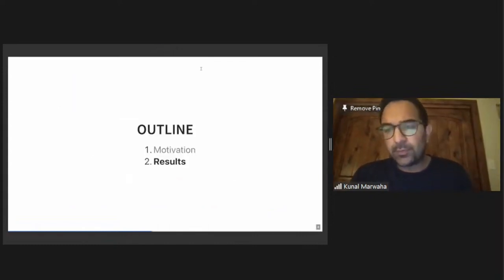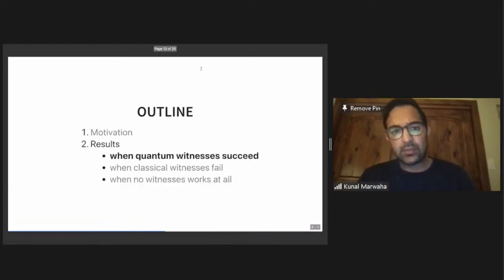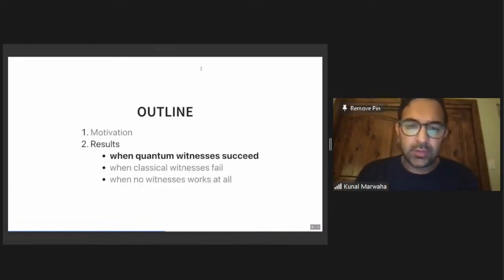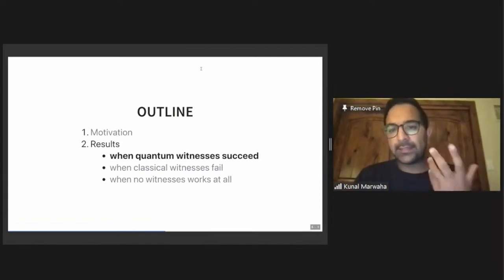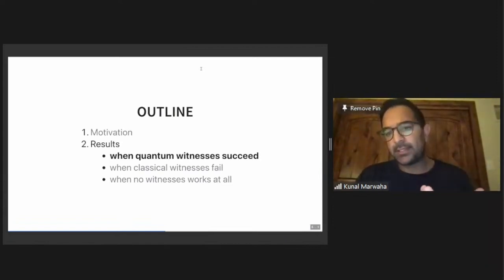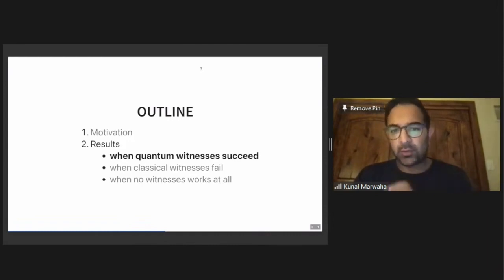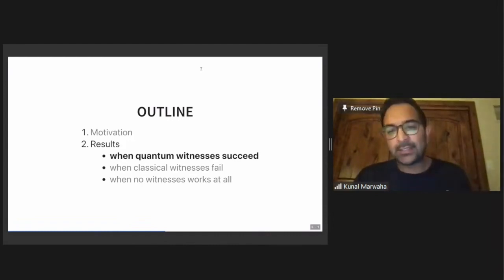I'll move on to the results section, split into three parts. We're looking at the same property testing problem, encoding it in different oracles, and seeing when quantum witnesses succeed, when classical witnesses fail, and when no witnesses seem to work at all.